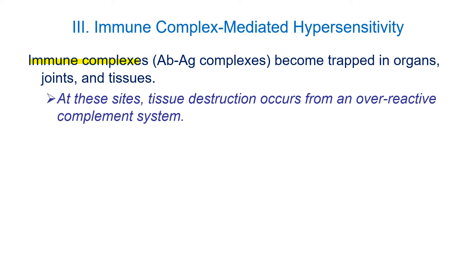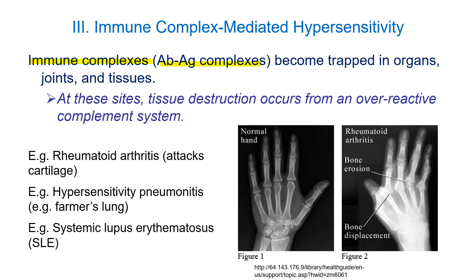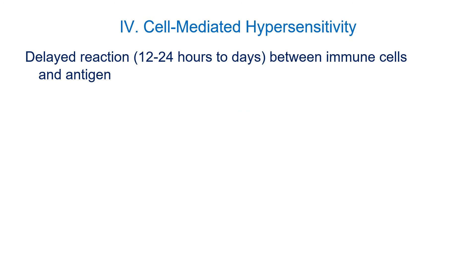Type 3 hypersensitivities are called immune complex-mediated. These involve antibody-antigen complexes that become trapped, leading to inflammation and damage of neighboring tissues. The most common example is rheumatoid arthritis — you can see a normal hand x-ray compared to one with rheumatoid arthritis, where there is damage in the knuckles. It is very painful and can be quite debilitating; simple tasks like doing buttons or zippers become very difficult. Also in this category are farmer's lung and lupus.